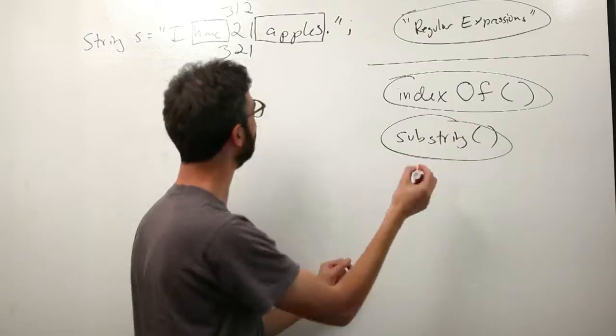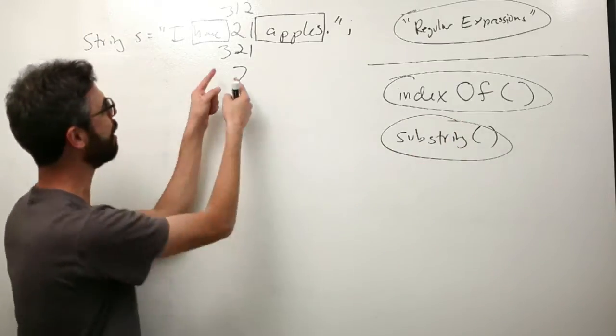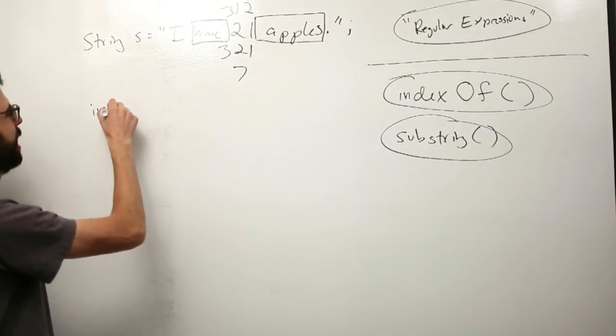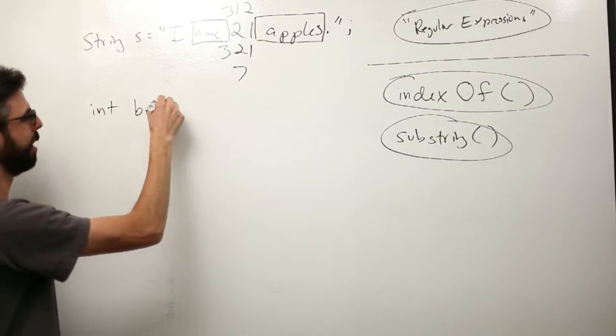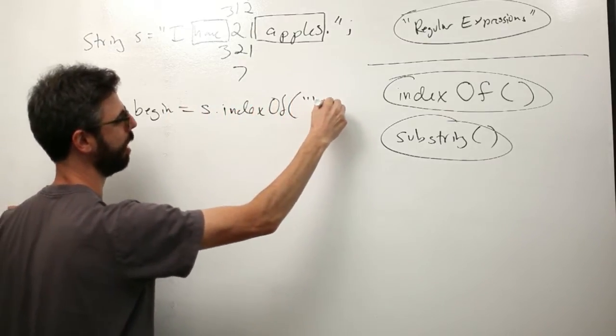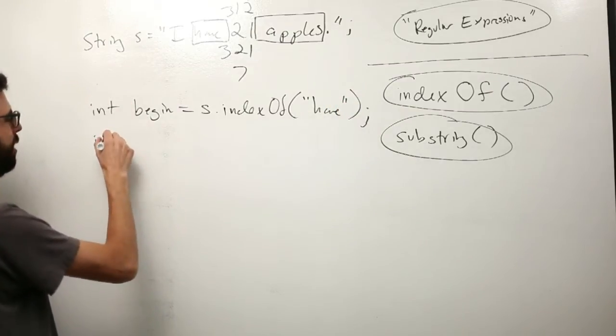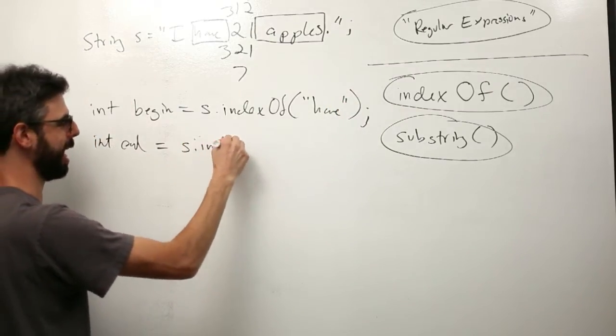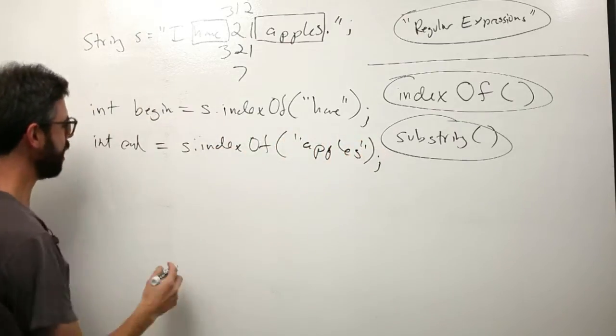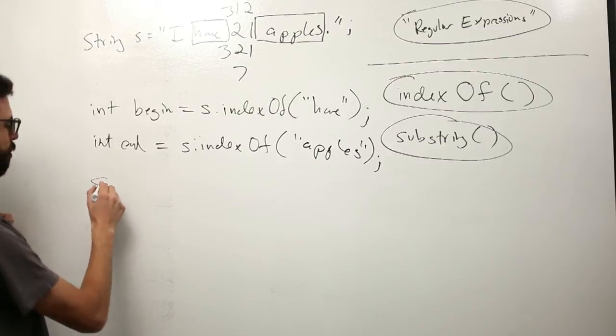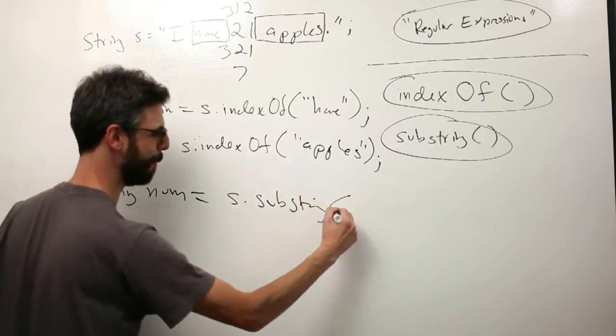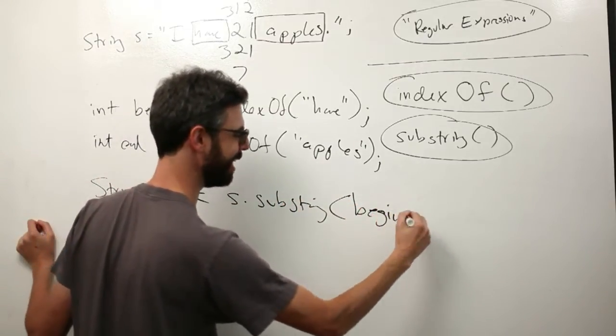indexOf will search for the index of a particular string inside of a string, and then substring will pull out a substring. What if I could then pull out all of the characters in between these two points? In other words, I'm saying, what if I were to say int begin equals s.indexOf("have"), and int end equals s.indexOf("apples").